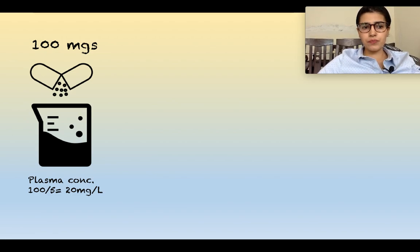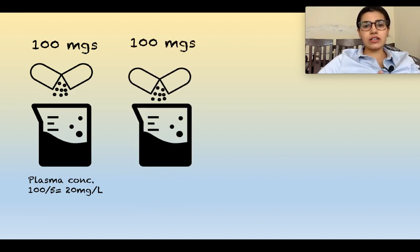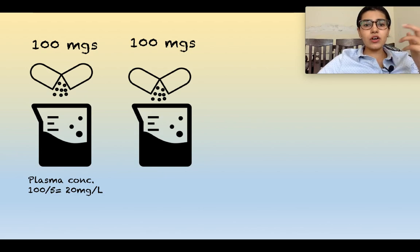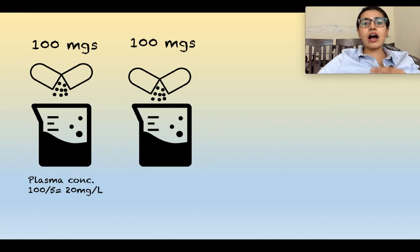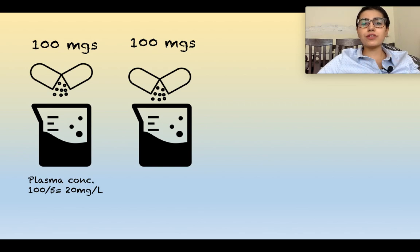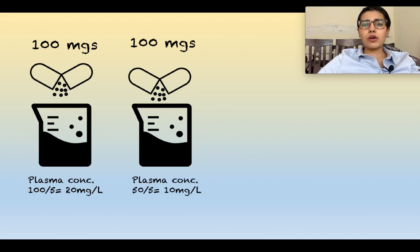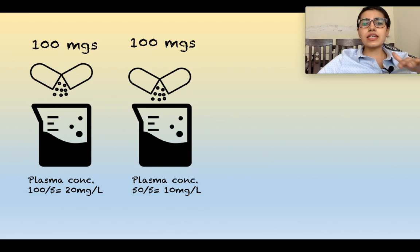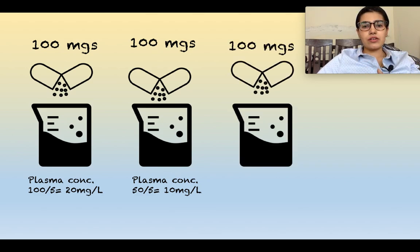This is a uniformly distributed beaker — a one-compartment model. In the second scenario, consider this beaker contains fishes. If you give 100 mg of drug, the fishes take up half — 50 mg — and only 50 mg is left behind. The plasma concentration now comes out to be 50 divided by 5 liters, which equals 10 mg/L.